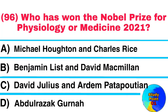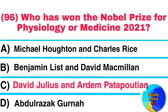Question No. 96. Who has won the Nobel Prize for Physiology or Medicine 2021? Answer: David Julius and Ardem Patapoutian.